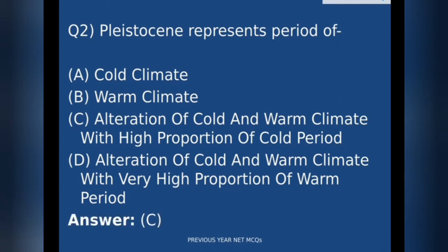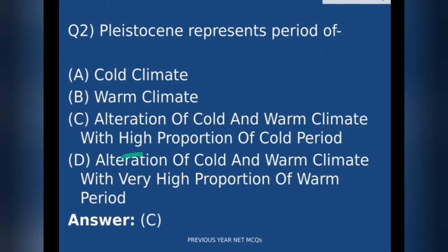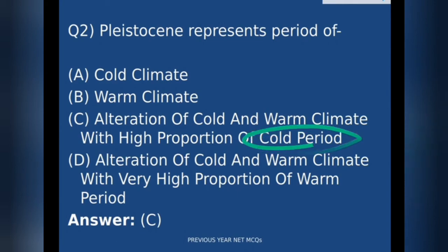The correct answer is option C. Pleistocene represents the period of alteration of cold and warm climate with high proportion of cold period. In the Pleistocene period, the proportion of cold period is higher as compared to the warm climate.